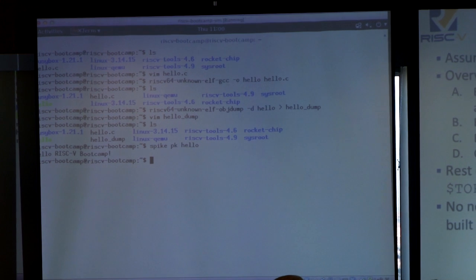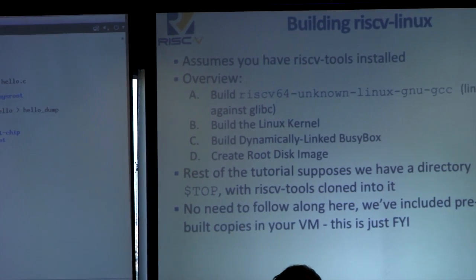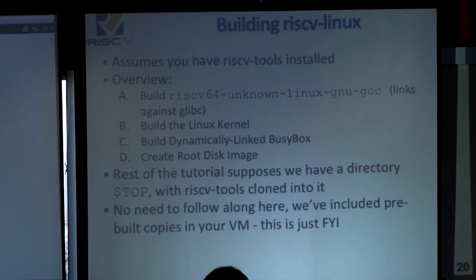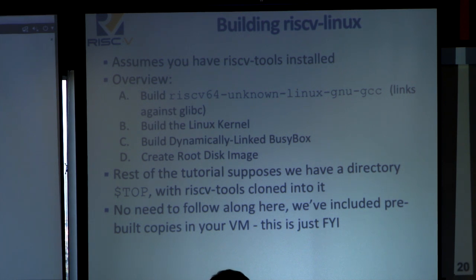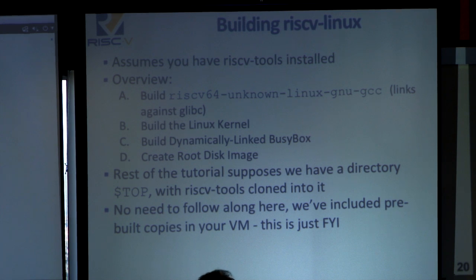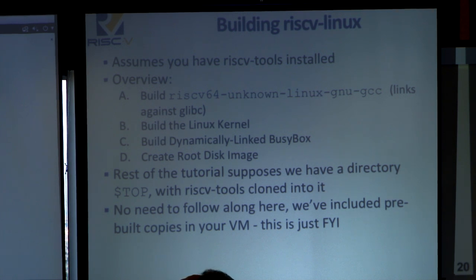The next thing is to run programs on QEMU on top of Linux, but first we need to actually build Linux. This process has already been done on your VM so we don't waste time. I'll breeze through the steps, then ask you to join in once we compile our own program, dump it in the root image, and run it on top of QEMU. The steps: build the Linux cross compiler, build the Linux kernel, build a dynamically linked copy of BusyBox, then create our root disk image. This tutorial assumes a directory called top with RISC-V tools cloned into it.